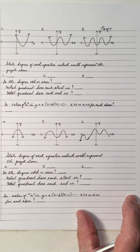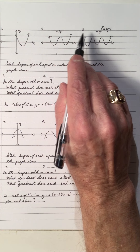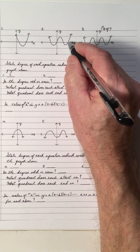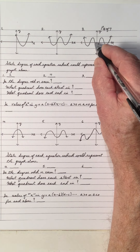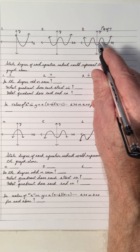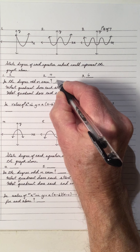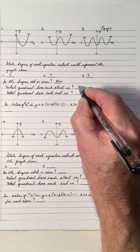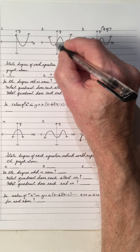Now, what about even-degree graphs? Looking at three graphs: the first has two x-intercepts, so the degree is two — a quadratic. The second has four x-intercepts, so that's a quartic. The third has six x-intercepts, giving degree six. All of these are even degrees. They all start in quadrant one and end in quadrant two — both ends go up.